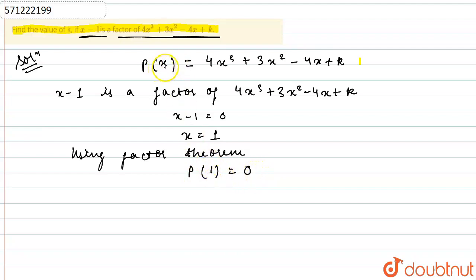Putting 1 in place of x, I get 4 times 1 cubed plus 3 times 1 squared minus 4 times 1 plus k equals 0. So it becomes 4 plus 3 minus 4 plus k equals 0.